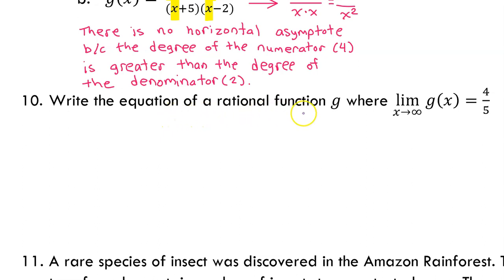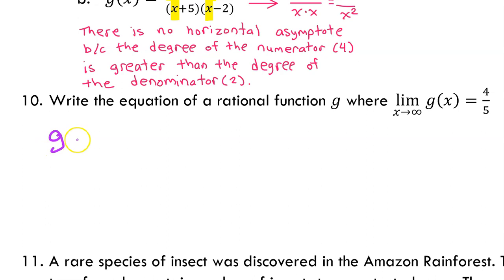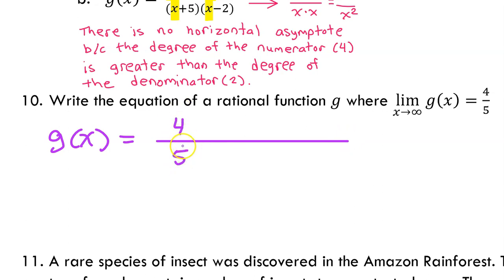Number 10: write the equation of a rational function g where the limit as x approaches infinity of g of x equals four-fifths. This end behavior is the horizontal asymptote. So we are writing a rational function that has a horizontal asymptote of y equals four-fifths. We will have a horizontal asymptote equal to a non-zero constant when the degrees are equal in the numerator and denominator, and four and five need to be the leading coefficients. So let's write g of x equals — we're going to have four and five as the leading coefficients, and we can write anything as long as the degrees are equal.